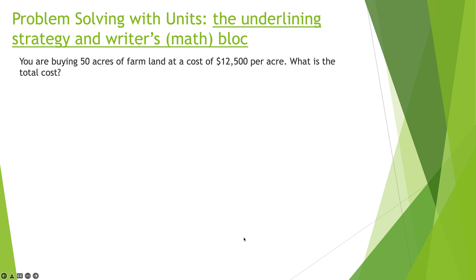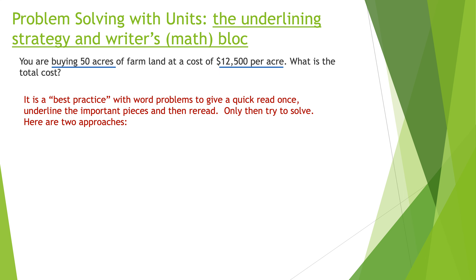A couple more problems, then we're done. I also want to talk about the underlying strategy, which applies to Praxis and any math work. Here's the problem: you're buying 50 acres of farmland at a cost of twelve thousand five hundred dollars per acre — what's the total cost? I always advise students to underline the important stuff and make sure you use it. Underline '50 acres' and '$12,500 per acre.'